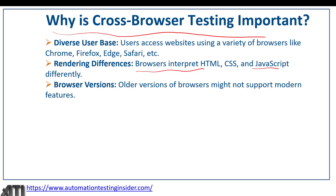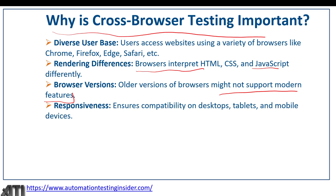Third, browser versions — older versions of a browser might not support modern features. In today's world, with new technologies emerging, old browser versions may not support new features. Fourth, responsiveness — ensuring compatibility on desktops, tablets, and mobile devices. Just because an application works on one device doesn't mean it will work on another. These are the different reasons we perform cross-browser testing, and it is very important nowadays.